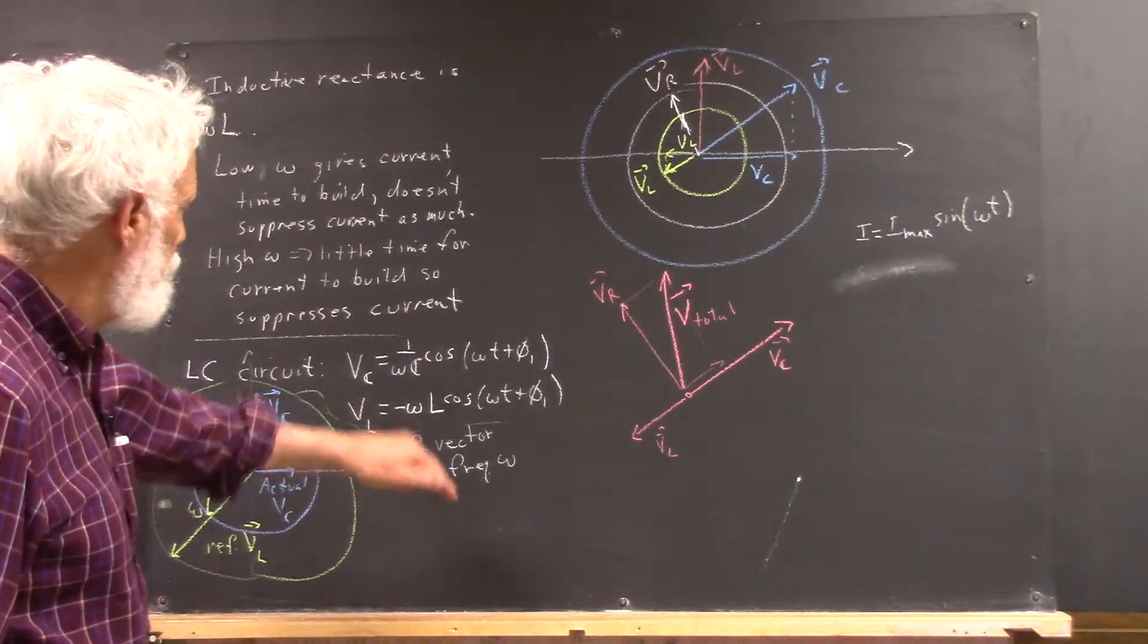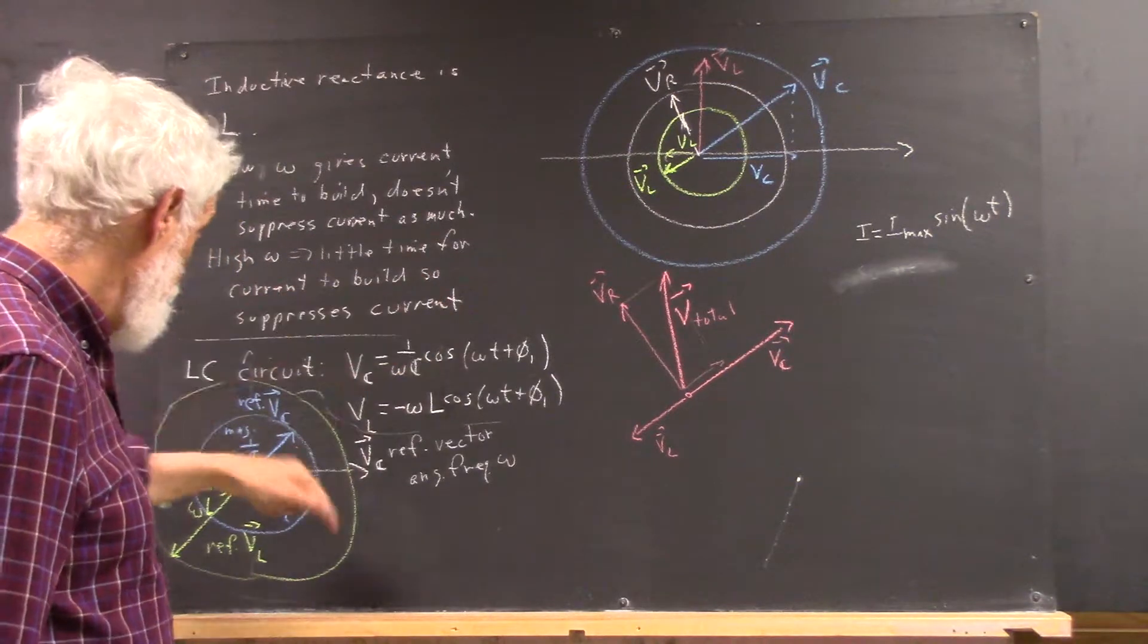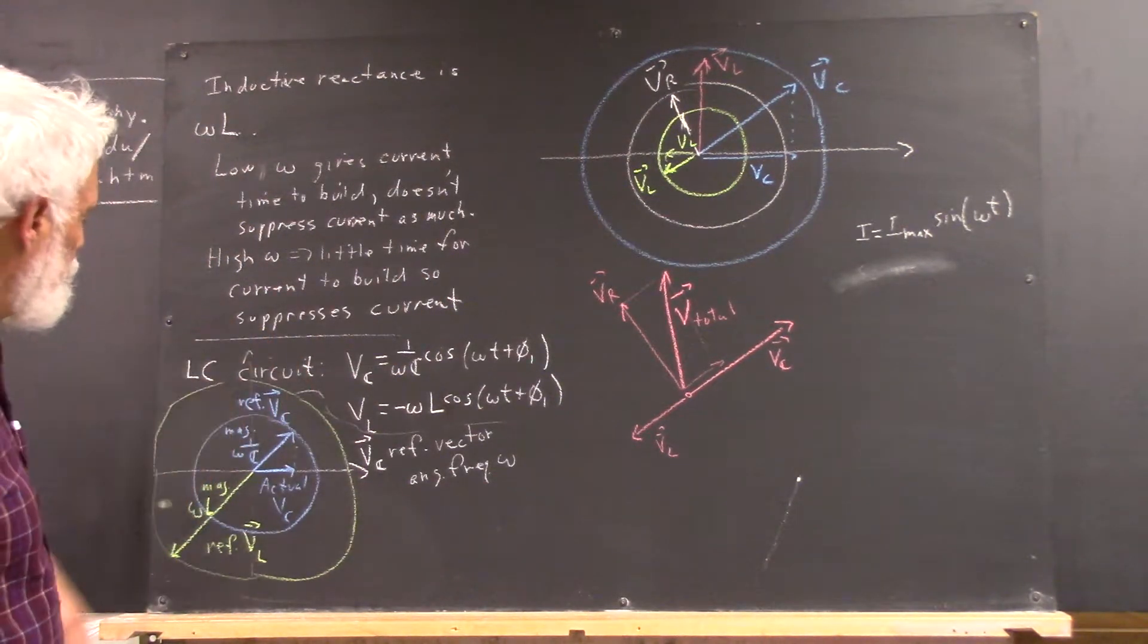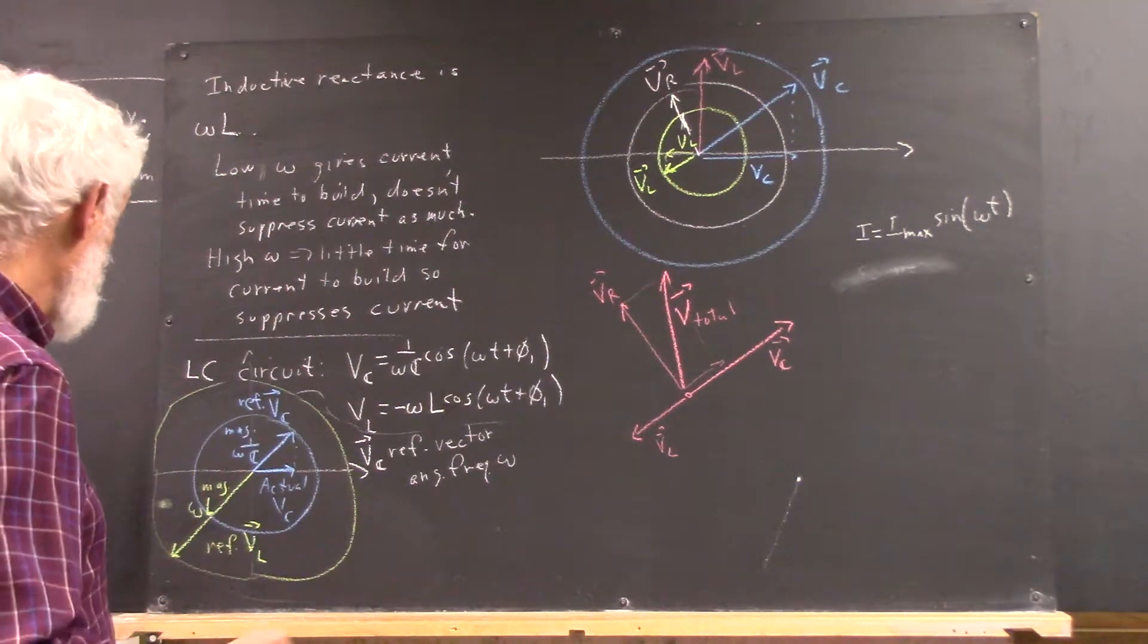It's 180 degrees out of phase with this being negative. It means it's equal and opposite. Well, it's in the opposite direction on the unit circle. It's not equal and opposite. Remember,